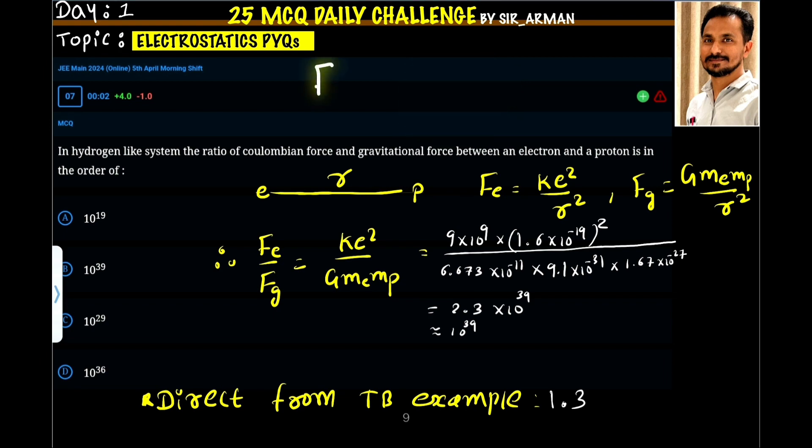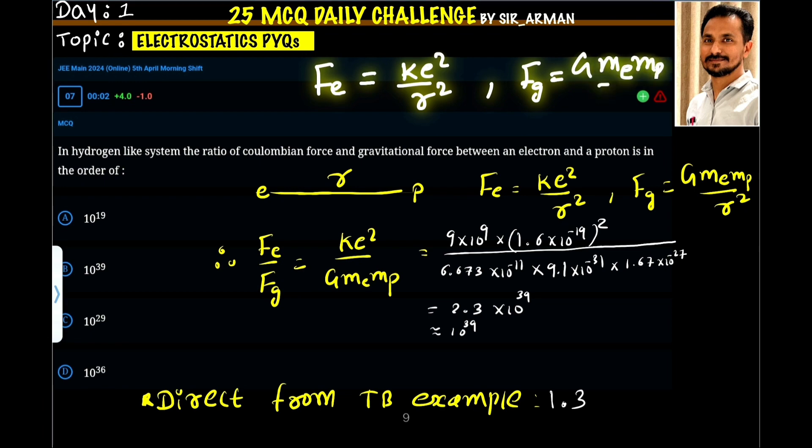So the electrostatic force between the electron and proton is given by K e square by R square and the gravitational force between the electron and proton is given by G mass into mass of electron into mass of proton by R square.